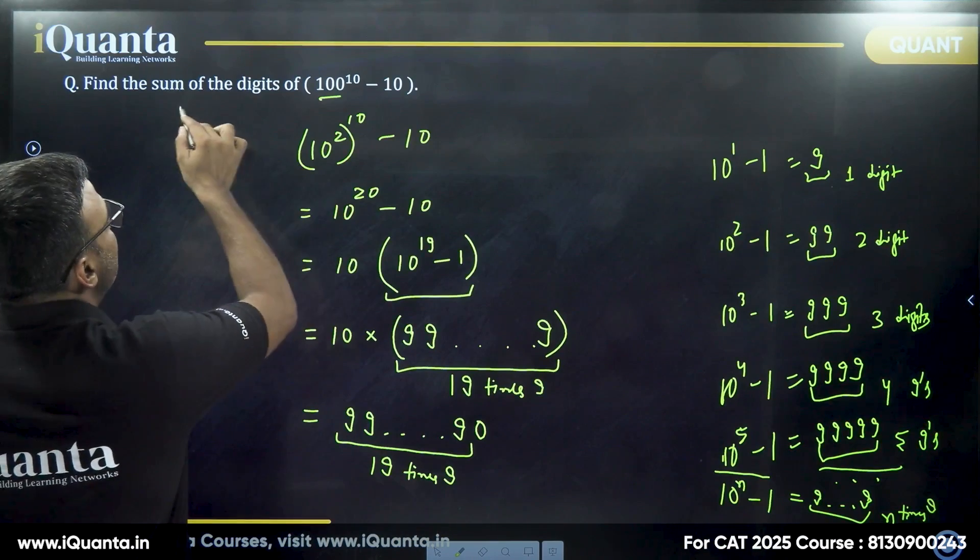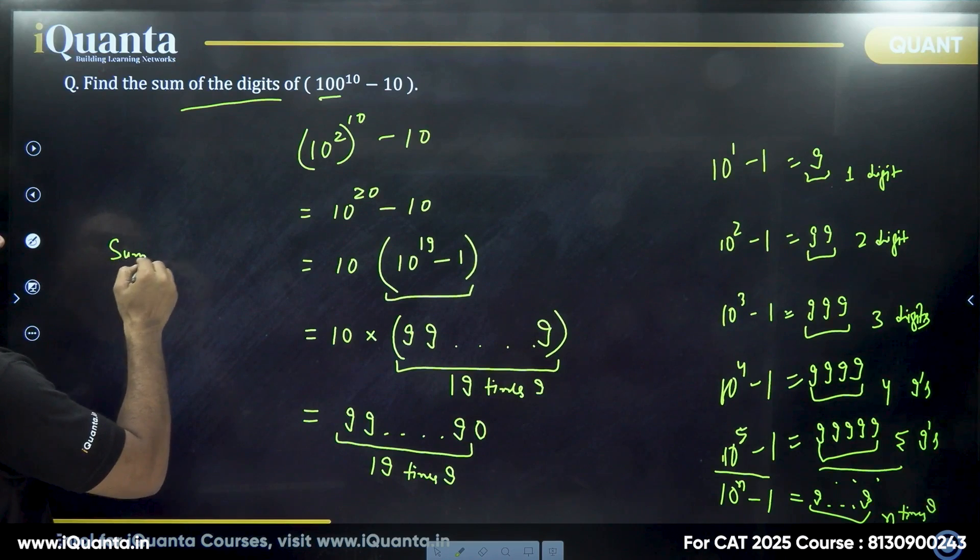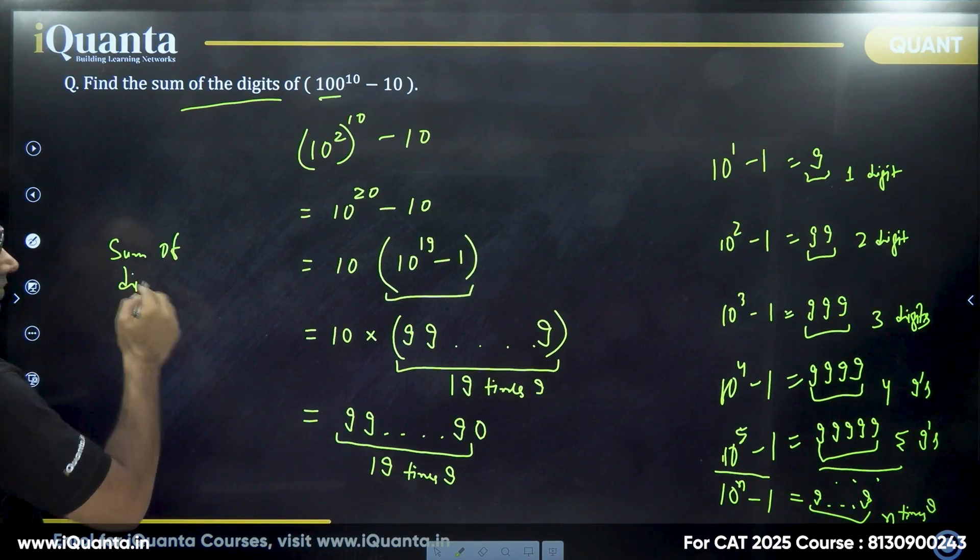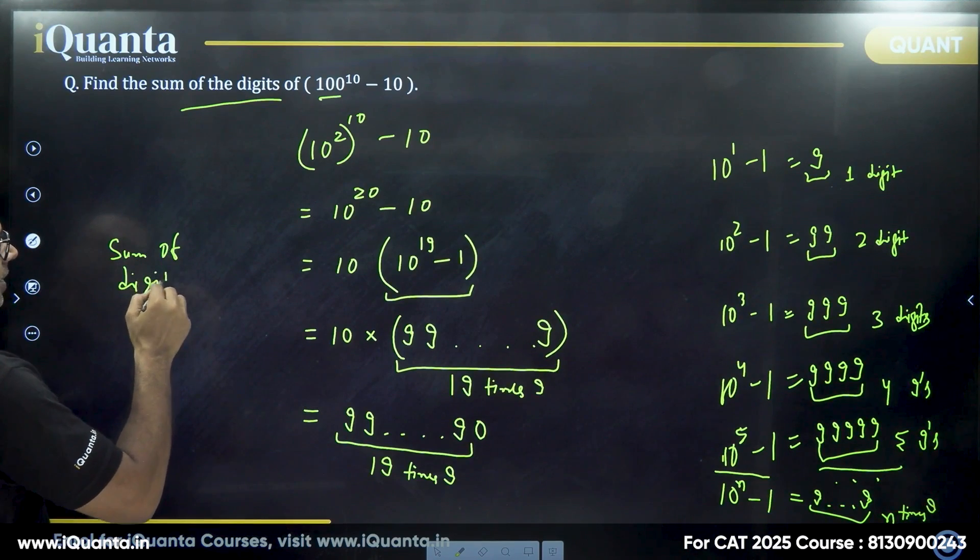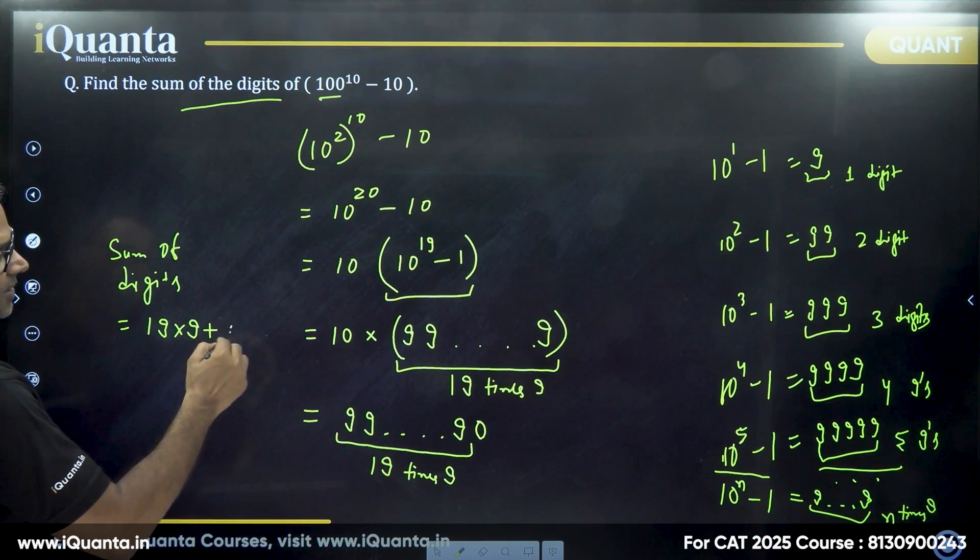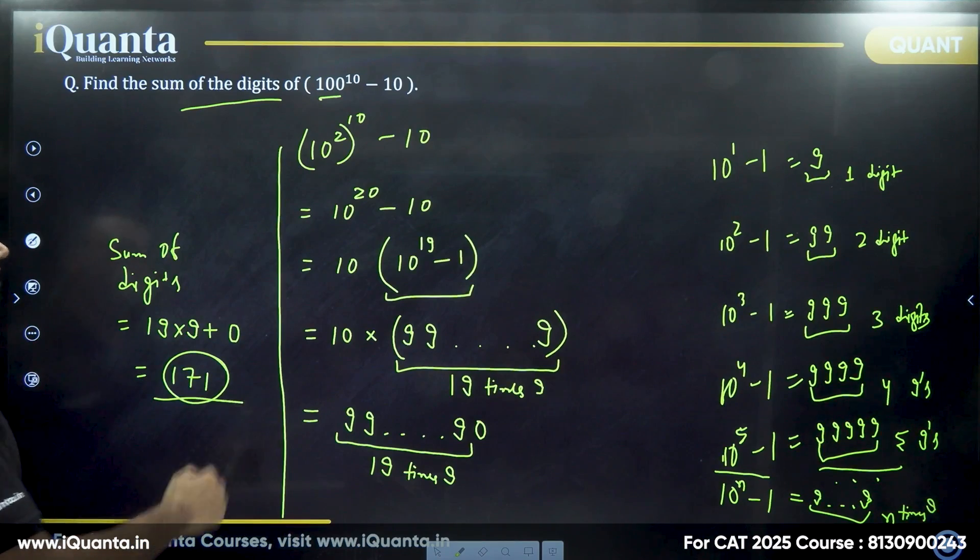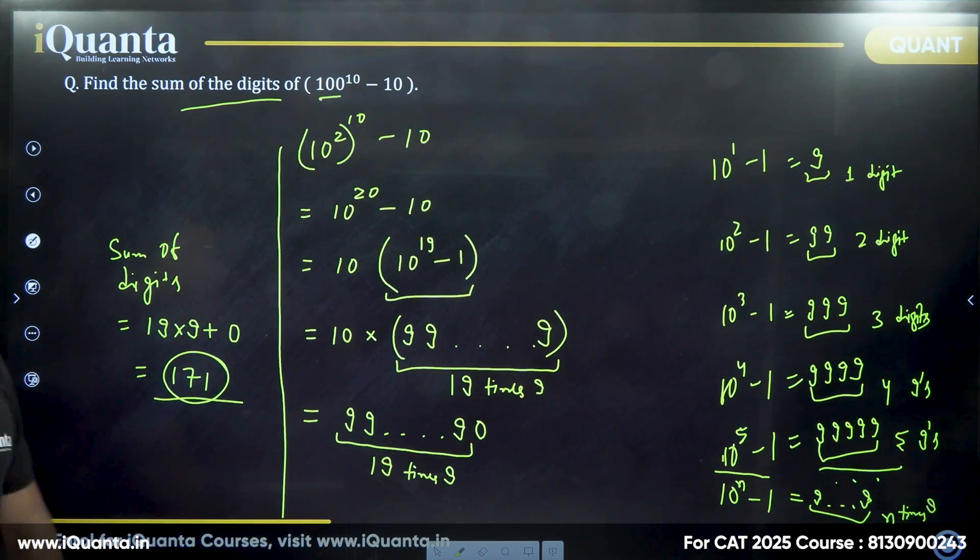The question is the sum of digits. So when you try to find the sum of digits, it will be simply sum of digits of this number is equal to 19 times 9 and a 0 in the end. Right? So that is equal to 171. So answer of this question, 171. Very simple.